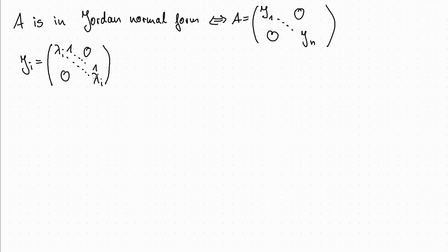Here, those lambda I do not have to be pairwise distinct in the different Jordan Blocks. So we can have several Jordan Blocks for the same eigenvalue. But of course, in one Jordan Block it is always the same eigenvalue.